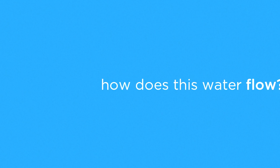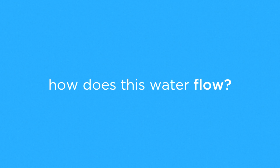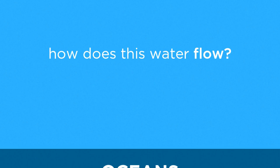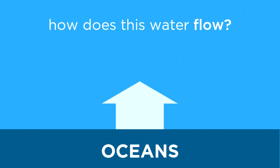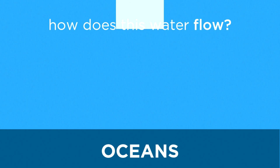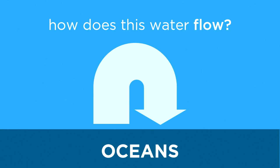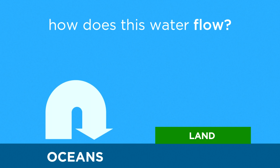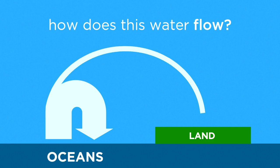How does this water flow? Roughly 413,000 cubic kilometers is evaporated by the sun every year. 373,000 cubic kilometers of which falls right back into the ocean, while only 40,000 cubic kilometers per year reaches the land as precipitation.